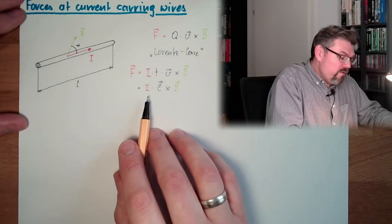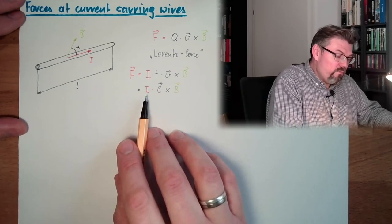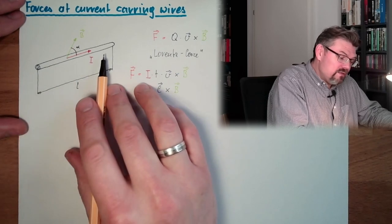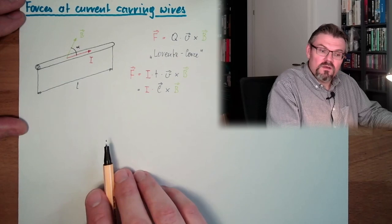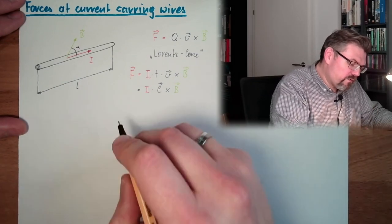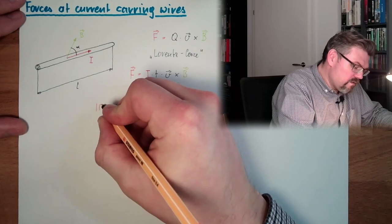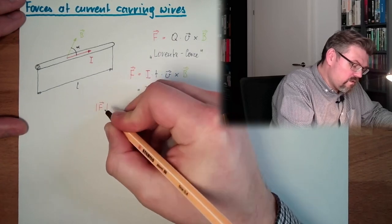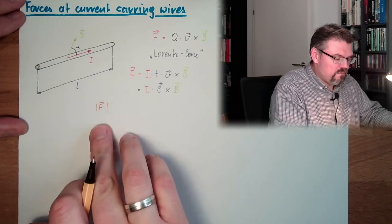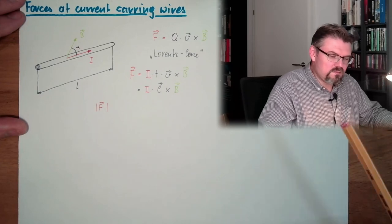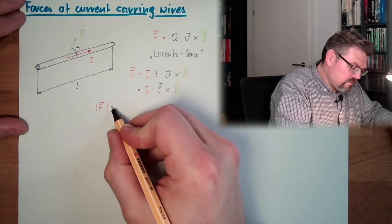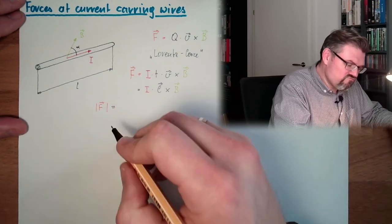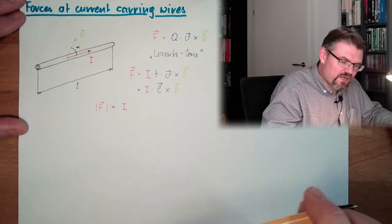So as soon as we have a current running through a wire, and we have a magnetic field, then there is force. What was the force again? How was this cross product?